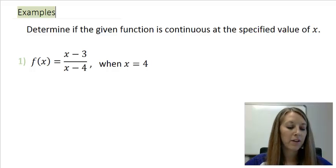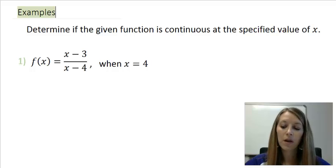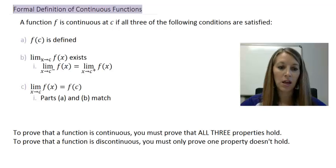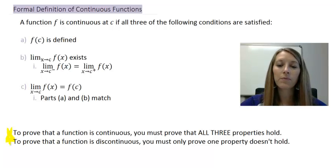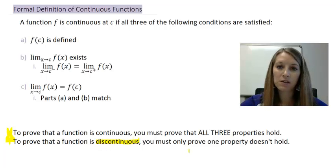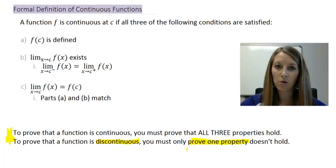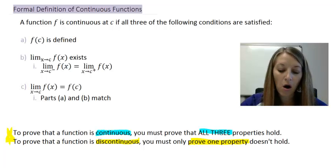In my first example, f(x) = (x-3)/(x-4). We want to figure out: is this function continuous at x = 4? Let's review the formal definition and what it takes to prove something is continuous or discontinuous. It's easier to prove discontinuity because we only have to show that one property doesn't hold.